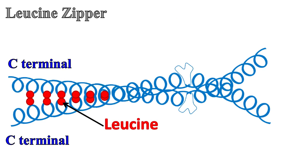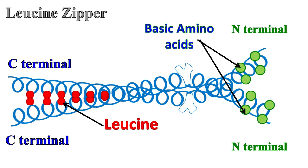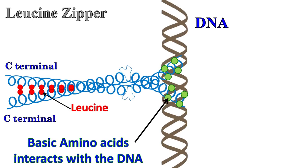The N-terminal end of these proteins have basic amino acids, and the basic amino acids have a net positive charge. The positively charged amino acids of the dimerized leucine zipper interact with the DNA, which has a negative charge due to the presence of phosphate.